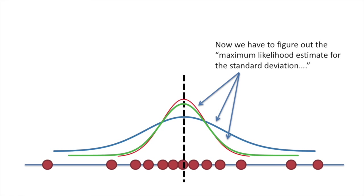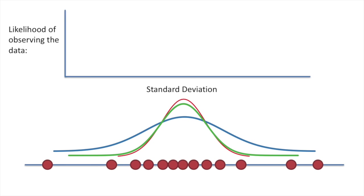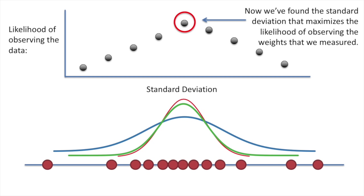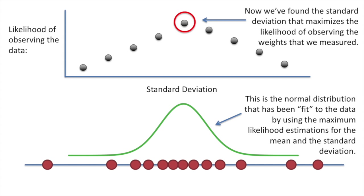Now we have to figure out the maximum likelihood estimate for the standard deviation. Again, we can plot the likelihood of observing the data over different values for the standard deviation. Now we've found the standard deviation that maximizes the likelihood of observing the weights we measured. This is the normal distribution that has been fit to the data by using the maximum likelihood estimations for the mean and the standard deviation.